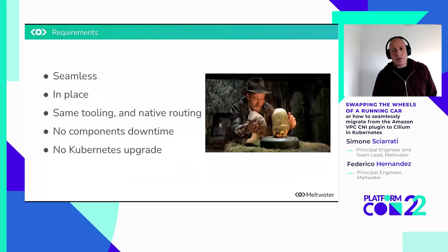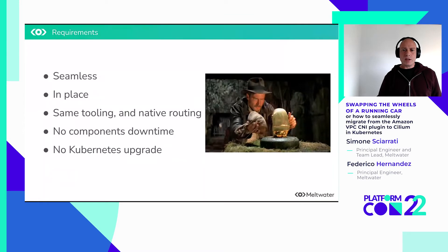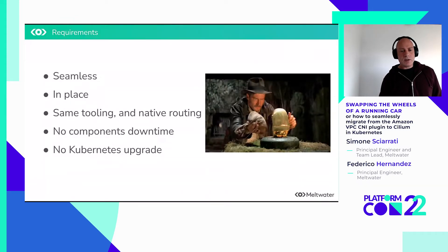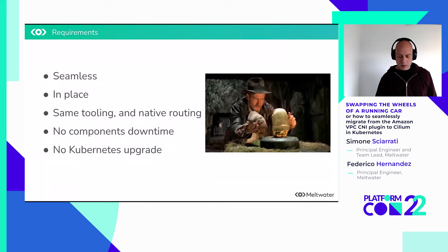Our requirements for the migration were that it should be seamless — our users should not have noticed the change, and we shouldn't have to have a maintenance window. It should be possible to do in place, as we don't have at the moment a mechanism to migrate our users from one cluster to another. We should not have to change our tools — we wanted to continue using KOPS, and we also didn't want to move away from using native routing. Every add-on in the cluster should continue to work as expected during and after the migration, and we didn't want to have to upgrade Kubernetes because of this.